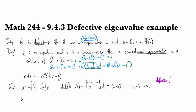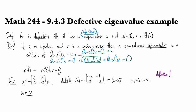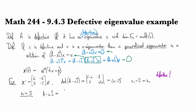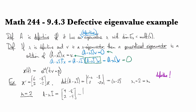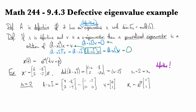Let's look for the eigenvector. We have A − λ₁I = [[4, −8], [2, −4]], which row reduces to [[1, −2], [0, 0]]. So we can take V₁ = (2, 1). This gives us one solution: e^(2t) · (2, 1). Now we need to find our next solution, so we look for a generalized eigenvector.